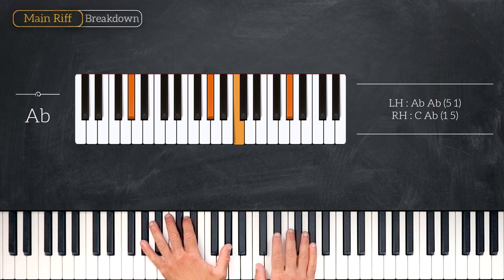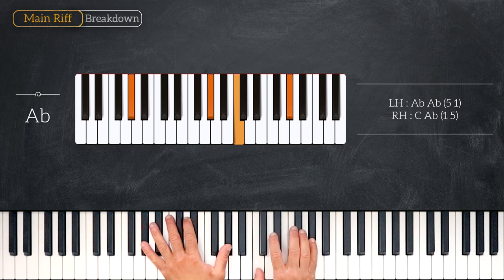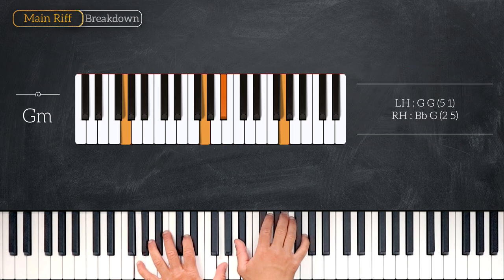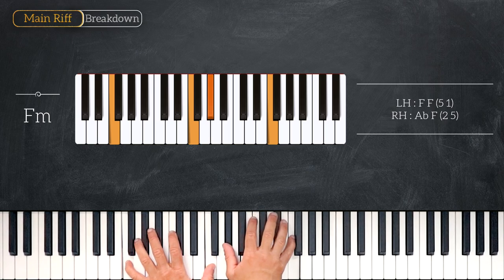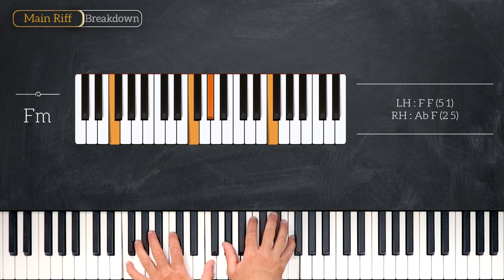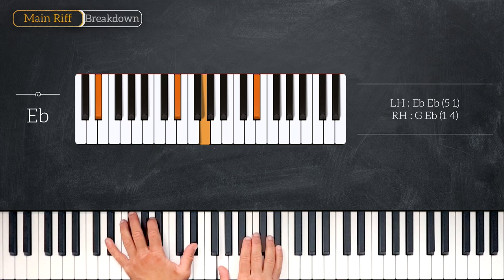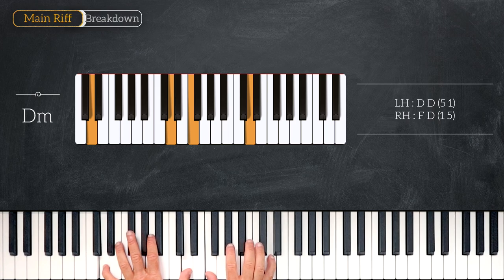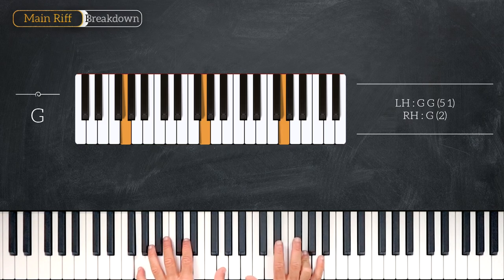So we start on A flat major, play octave A flat C A flat. Then we'll play G minor, octave G B flat G, into F minor, so we play octave F on the left, A flat F on the right. Into E flat major, playing octave E flat on the left hand, G E flat. Then we'll play D minor, octave D on the left, F D on the right. And we'll finish by playing G's in octave, so octave G on the left and G on the right.